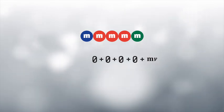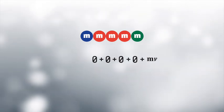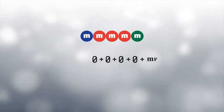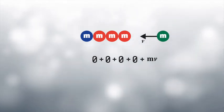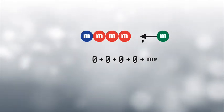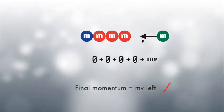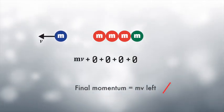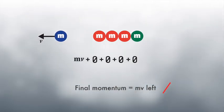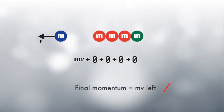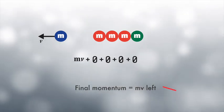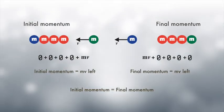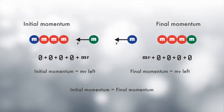We can calculate the total momentum before the collision. Let the mass of each of the balls be m. The velocity of the ball on the right is v moving to the left. The velocity of all the other balls is zero. The total momentum before the collision is mv towards the left. After the collision, the ball on the right stops moving. All the other balls are also stationary, so all these four balls have no momentum. But the ball on the left moves with velocity v to the left. The total momentum after the collision is mv towards the left. The total momentum before the collision equals the total momentum after the collision.